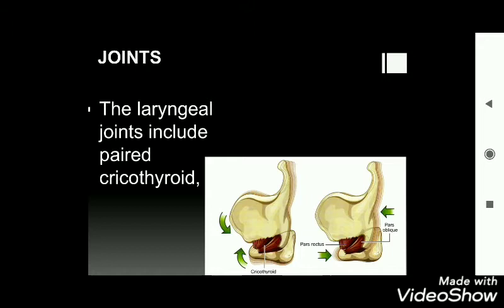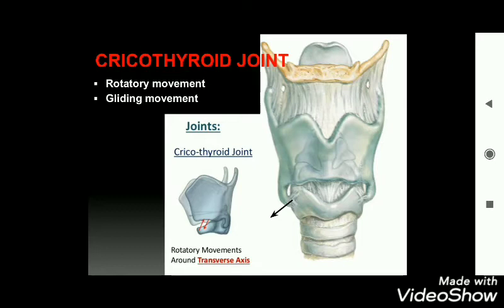The laryngeal joints include paired cricothyroid and cricoarytenoid joints. In the cricothyroid joint, the inferior thyroid horns extend downwards and articulate with the cricoid cartilage to form the cricothyroid joint. The movements of this joint are rotatory movement and gliding movement.